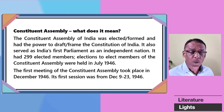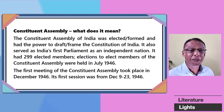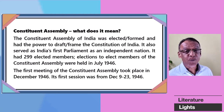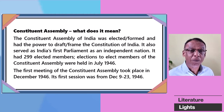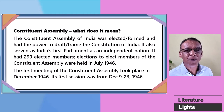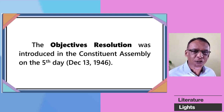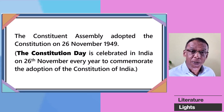What is a Constituent Assembly? The Constituent Assembly of India was elected and it had the power to draft the constitution of India. This Constituent Assembly also served as India's first parliament as an independent nation. Remember, this Constituent Assembly had 299 elected members. The elections to elect the members were held in July 1946. The first meeting of the Constituent Assembly took place in December 1946, with the first session running from the 9th to the 23rd of December 1946. The Objectives Resolution was introduced on the 5th day of the first session — that is, the 13th of December 1946.